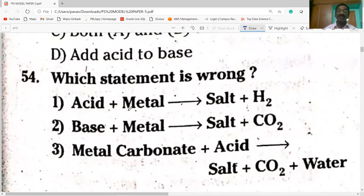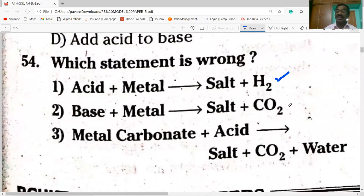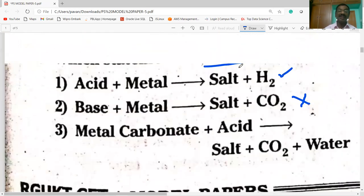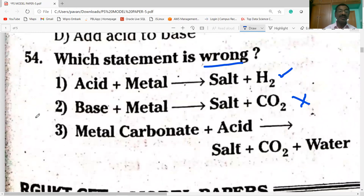Next question. This statement is wrong: acid plus metal gives salt plus hydrogen, it is correct. Base plus metal gives salt plus carbon dioxide is the wrong option. Base plus metal like zinc plus sodium hydroxide gives salt plus hydrogen. Option B is wrong, so second statement is wrong, option 2.